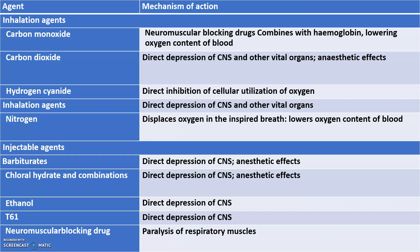Inhalation agents such as nitrogen directly depress the CNS and other vital organs. Injectable agents — the main ones being barbiturates — cause direct depression of the CNS and have anesthetic effects. Chloral hydrate, ethanol, and T61 also cause direct CNS depression. Neuromuscular blocking drugs cause paralysis of the respiratory muscles, leading to respiratory failure, decreased blood oxygen content, and ultimately death.